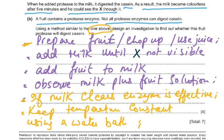To design the investigation: take a fixed mass of fruit and chop it up or extract its juice. Add enough milk to the beaker so the X is not visible, then add the fruit solution to the milk and observe. If the milk becomes clear, the enzyme is effective; if not, it is not effective. Keep temperature constant using a water bath so that enzyme activity is not affected.